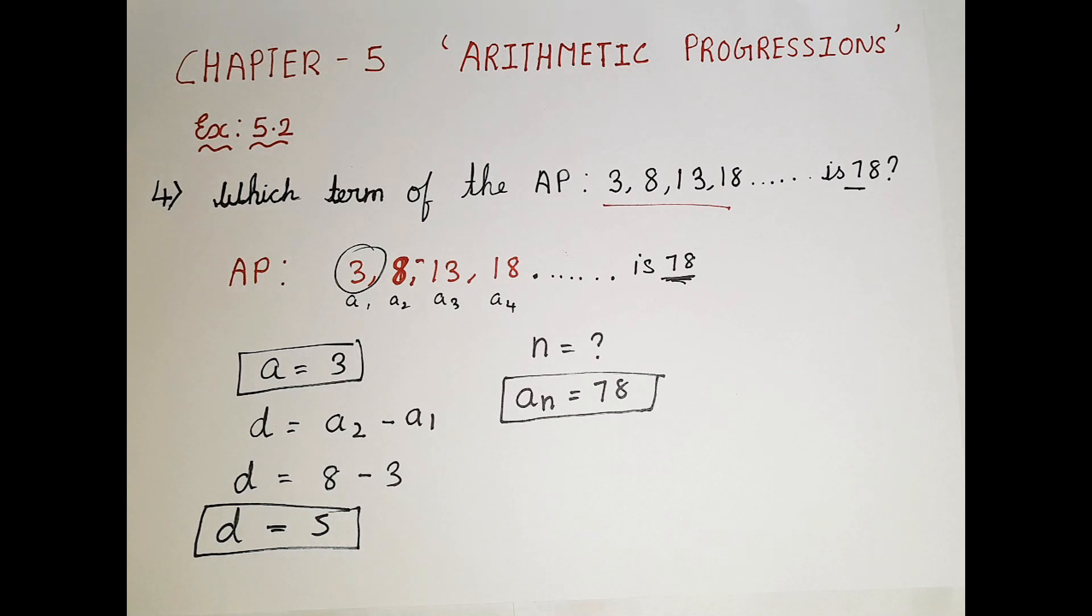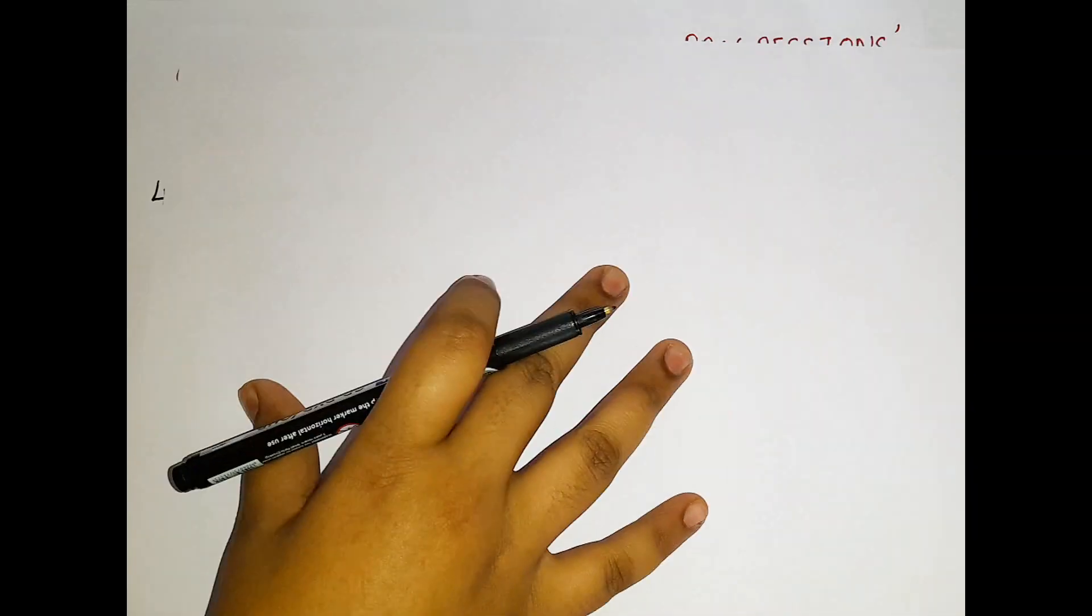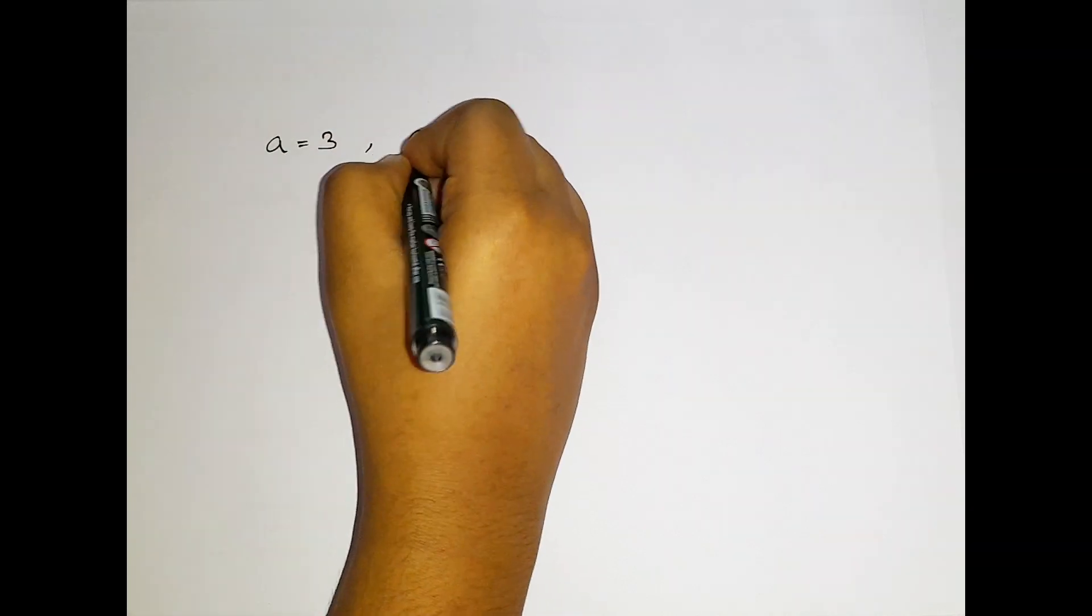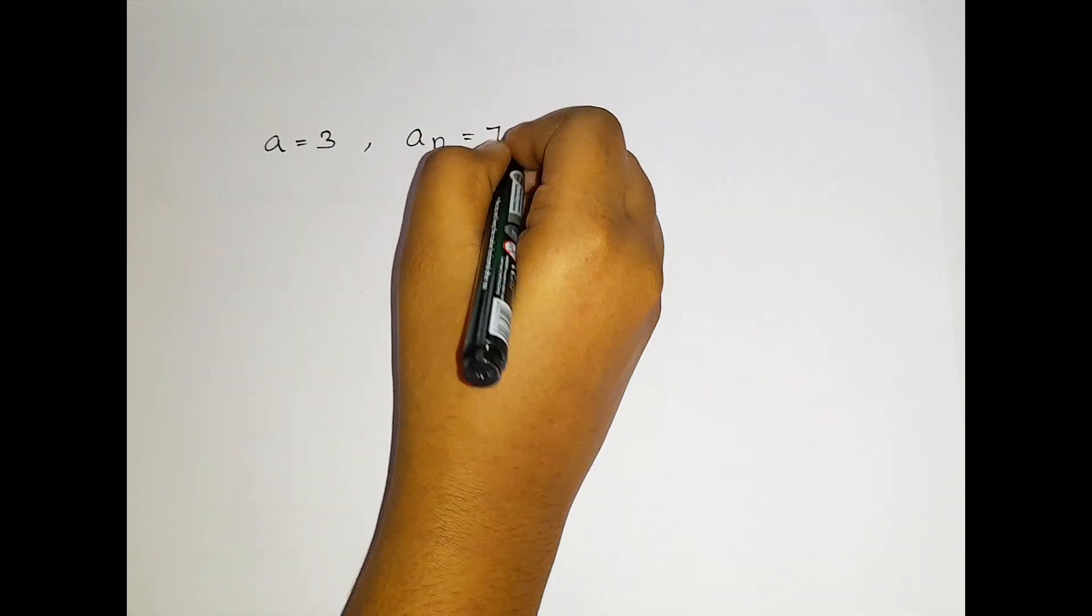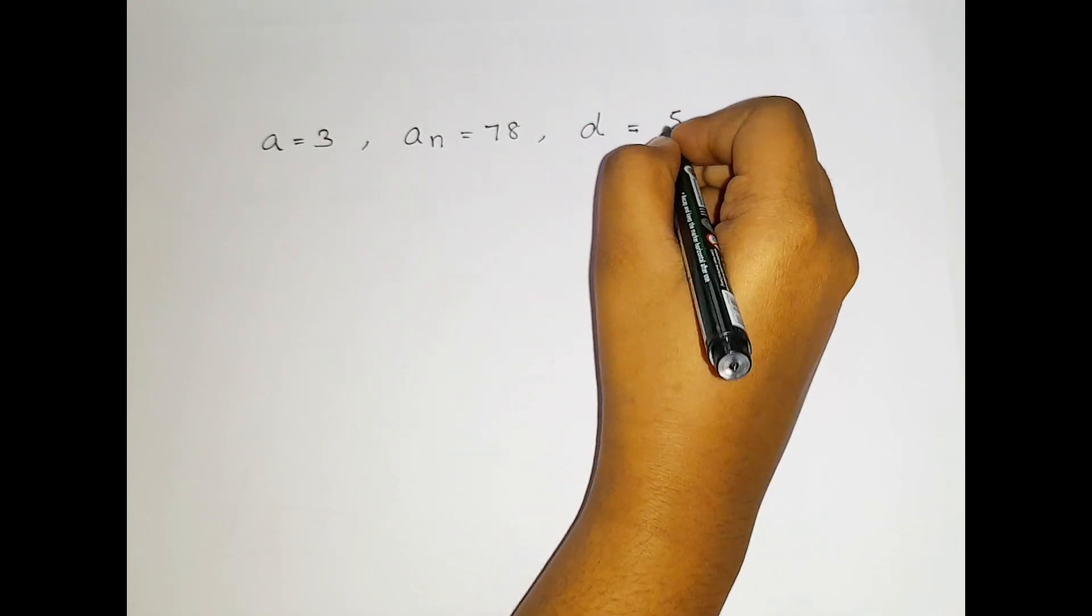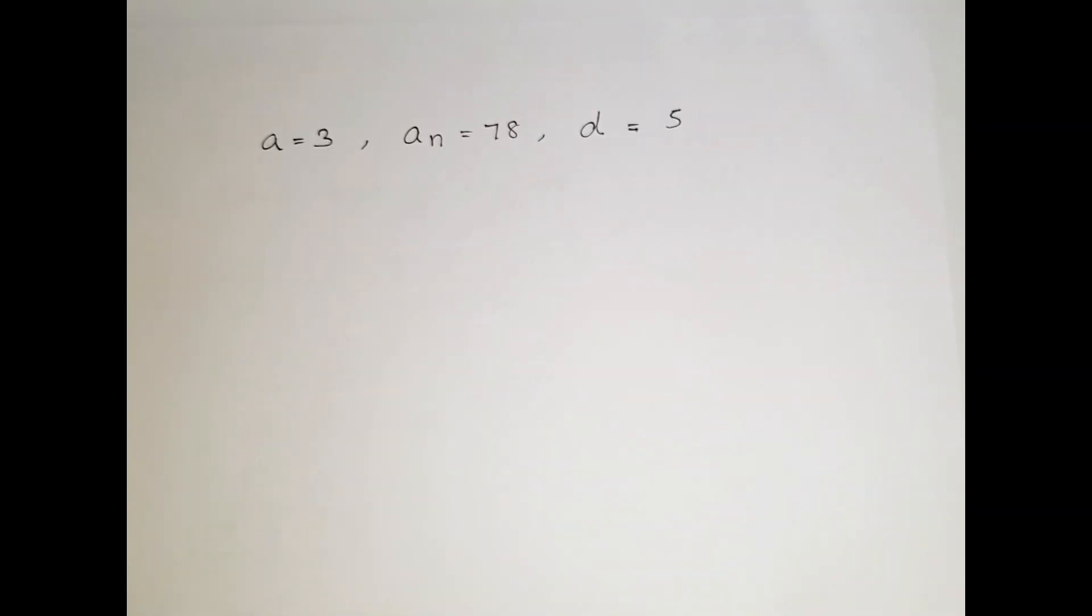We will solve a lot of problems, that time only you will get to know. Let us solve them. First of all, let me just write the values. a is equal to 3 and then an is 78 and d is equal to 5. Now let us apply the formula.